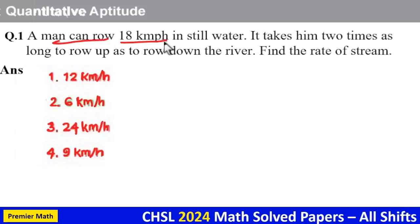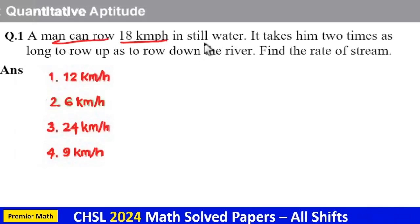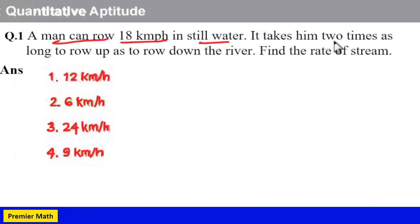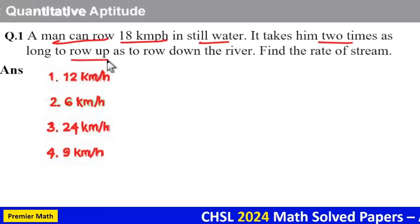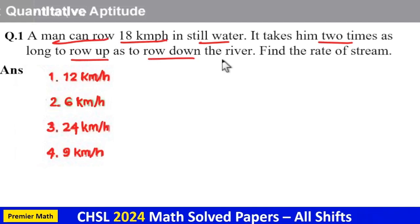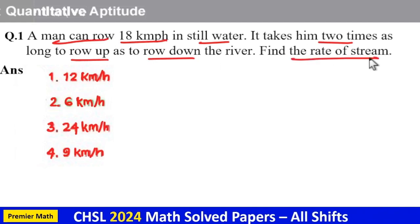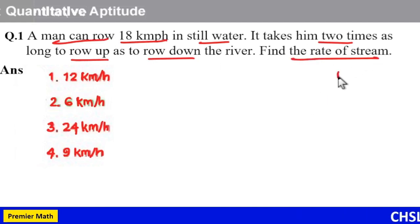A man can row 18 km per hour in still water. It takes him two times as long to row up as to row down the river. Find the rate of stream.